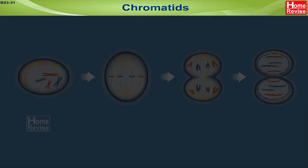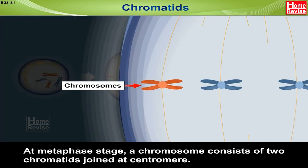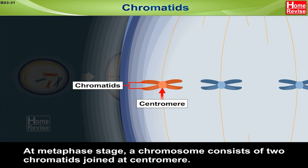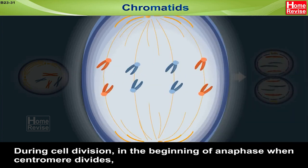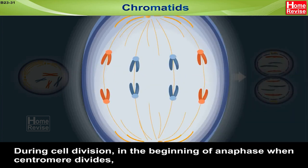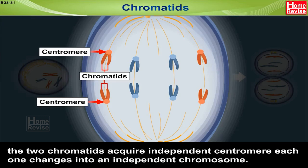Chromatids: At the metaphase stage, a chromosome consists of two chromatids joined at the centromere. During cell division, at the beginning of anaphase, when the centromere divides, the two chromatids acquire independent centromeres. Each one then changes into an independent chromosome.